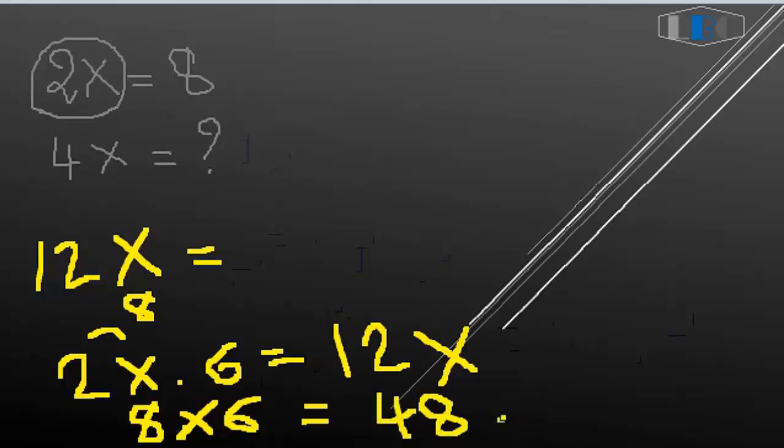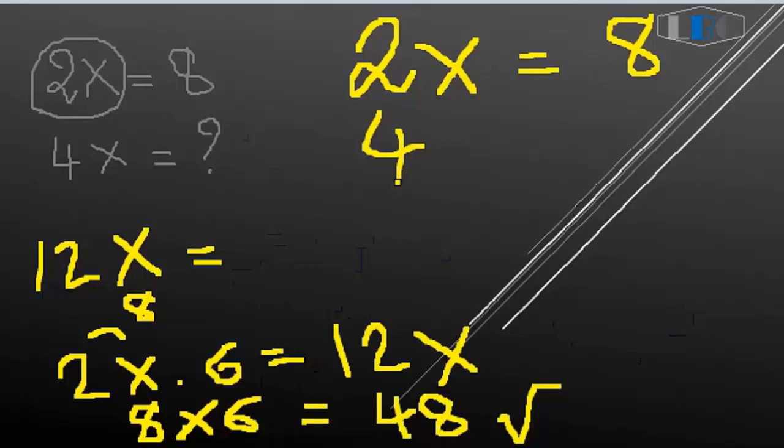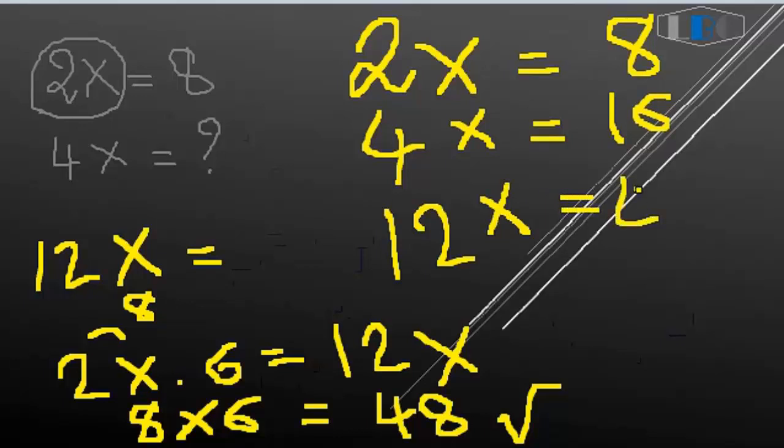And so the final: 2X equal 8, 4X, 4X and 4X equal. 4X, okay, this answer. And thank you for watching and don't forget